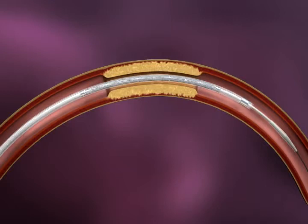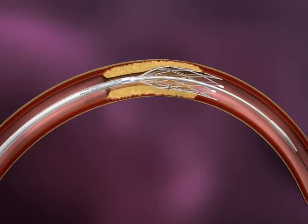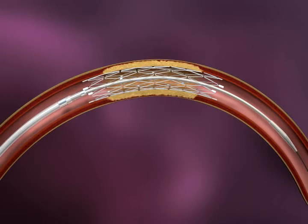To deploy the stent, the inner body should be held stationary with one hand while the other hand withdraws the outer body. This results in an unsheathing of the stent.